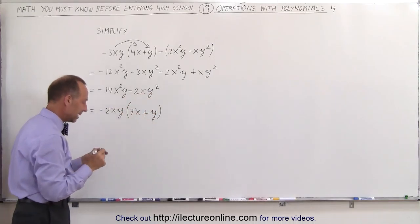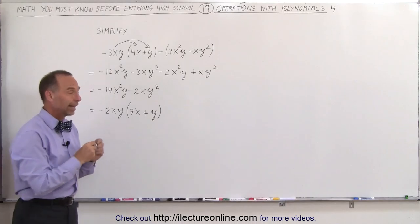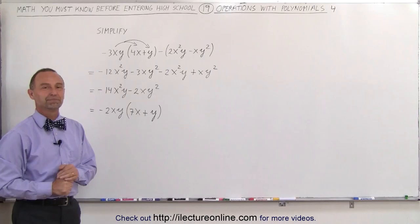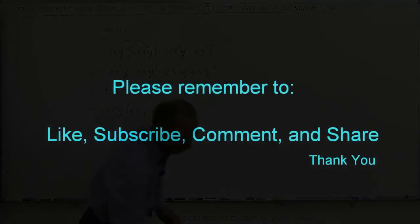so these two terms can be combined. Minus 12x squared y minus 2x squared y is minus 14x squared y.